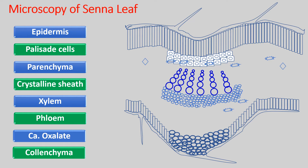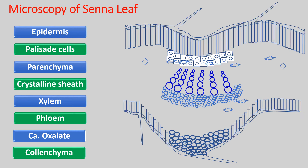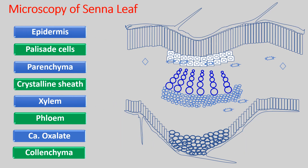Next is the columnar cell-like appearance — that is palisade cells. The palisade cells are present on both surfaces, upper as well as lower. This is the reason why Senna leaf is called an isobilateral leaf. Breaking down the word: iso means same, bi means two, and lateral means side. So from both surfaces it appears very similar — the upper surface is a mirror image of the lower one.